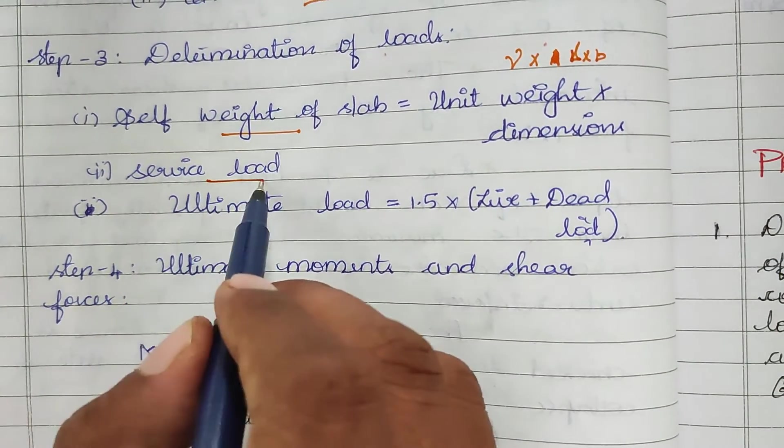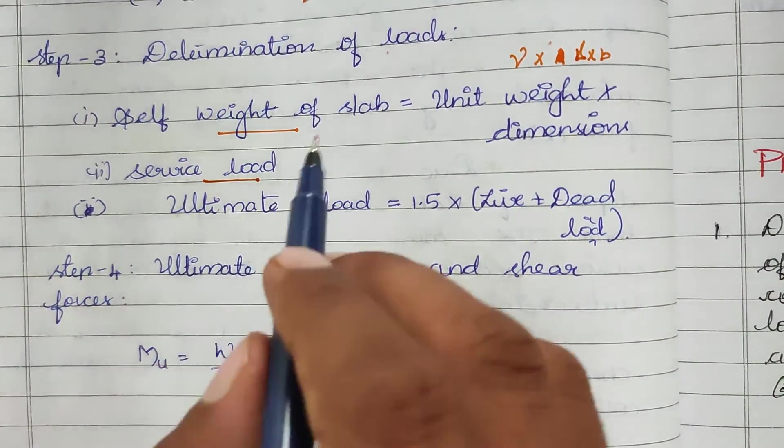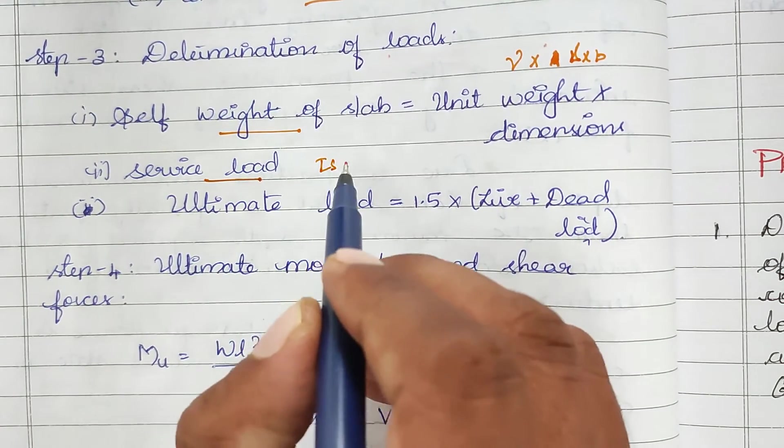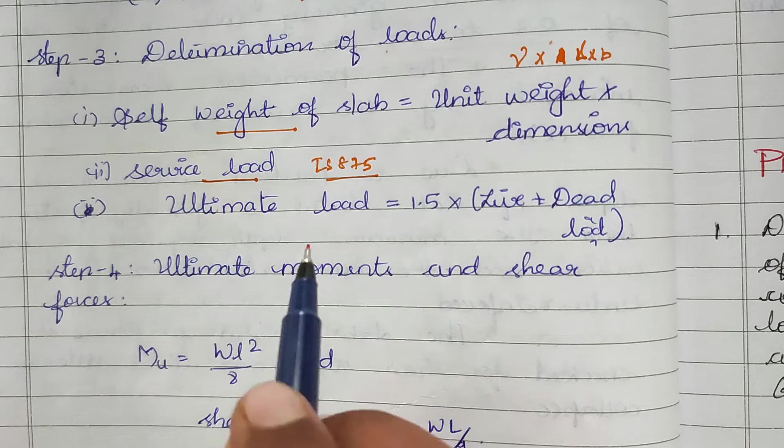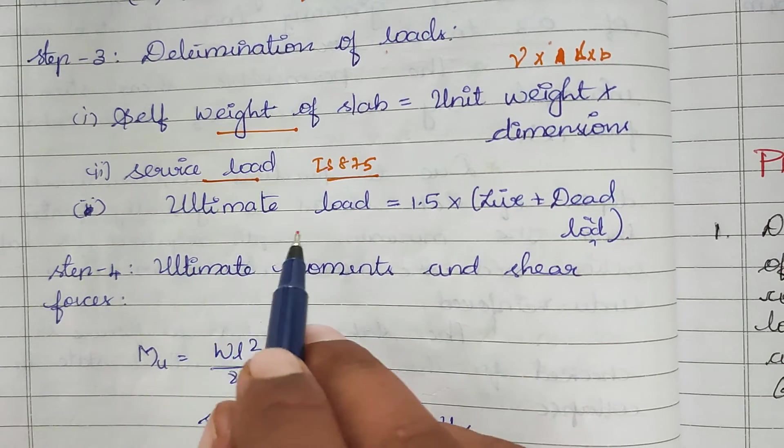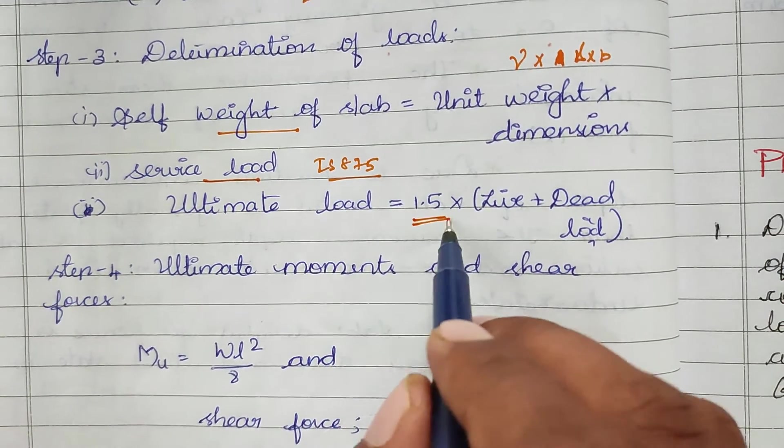Next is service load, which is live load. We can assume that or take from IS 875. Then we find the ultimate loads: 1.5, the factor of safety, times the total load of service load and self weight.